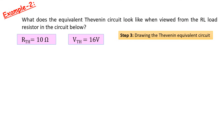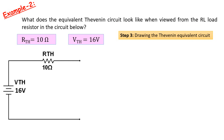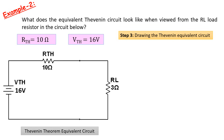We've found Thevenin's equivalent resistance and Thevenin's open-circuit voltage. The third and last step is to draw the Thevenin equivalent circuit. The Thevenin voltage is shown as an independent voltage source, and the equivalent resistance of Thevenin is connected in series with it. You can also connect the load resistor RL to this circuit and find the load current if you want. This is the Thevenin equivalent circuit for this example. This is basically what Thevenin's theorem looks like.